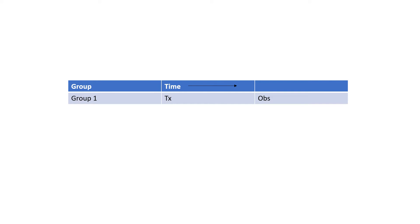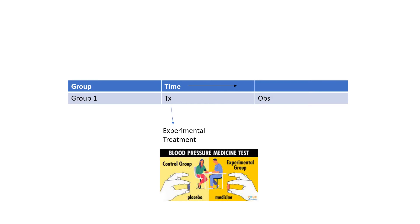So let's learn what this is all about. The one-shot experimental case study is probably the most primitive type of experiment that you might call research. So here an experimental treatment is introduced, and then a measurement or a post-test of some sort is administered to determine the effects of the treatment.